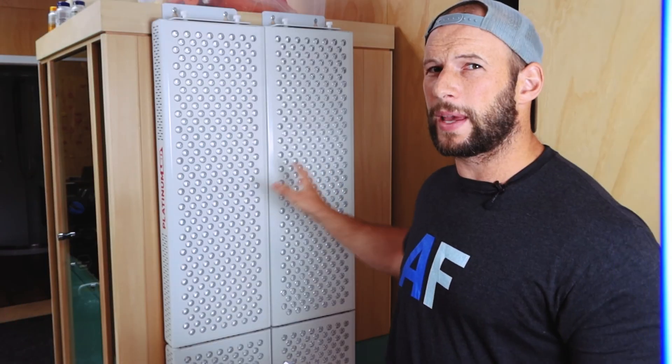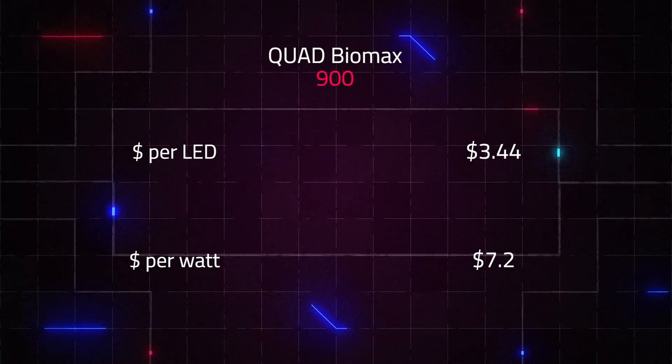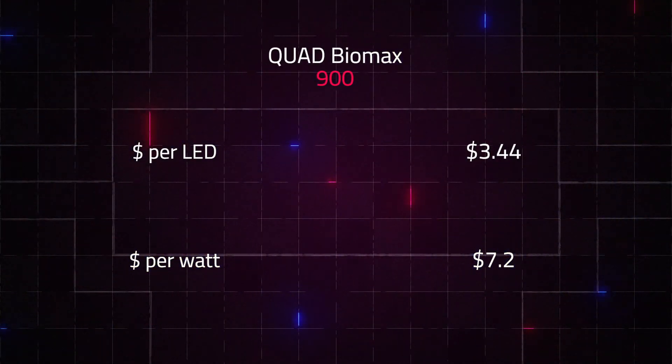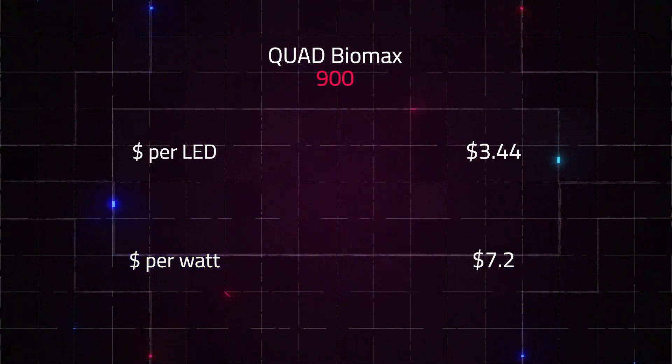There are five wavelengths being emitted from this panel. 80% of it is going to 660 and 850 nanometers. And then 20% is going to 630, 810, and 830 nanometers. From a value point of view, this is the best panel I've ever tested. It's only $3.44 per LED or $7 per watt of therapeutic red light, which again is the best I've ever tested.